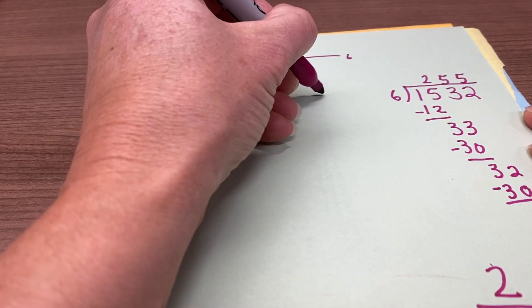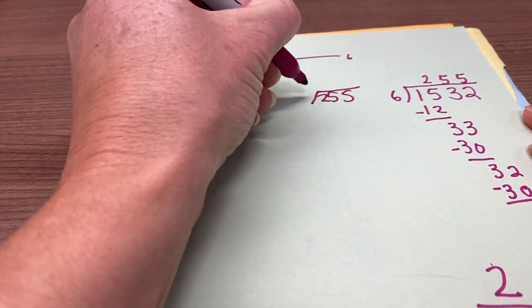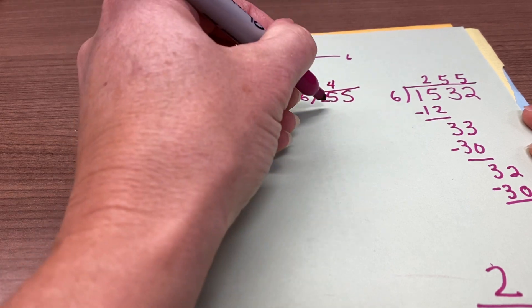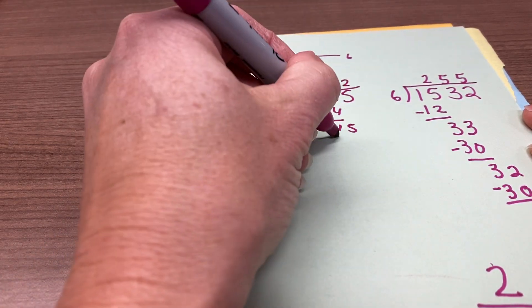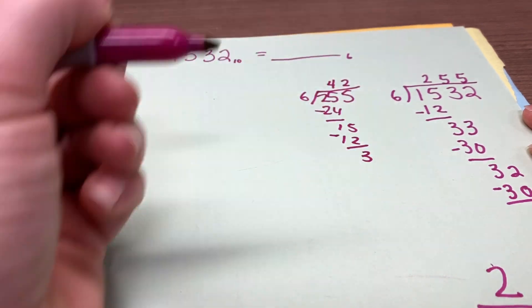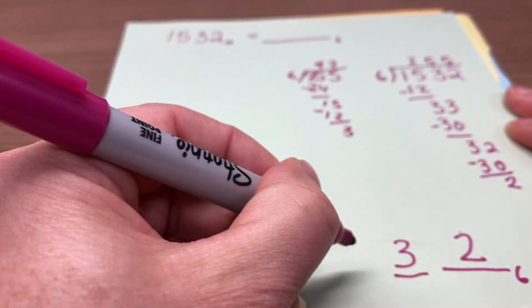Now we take 255, divide that by 6, and it goes in 4 times, 15 goes in twice, remainder 3. 3 goes in this place value.